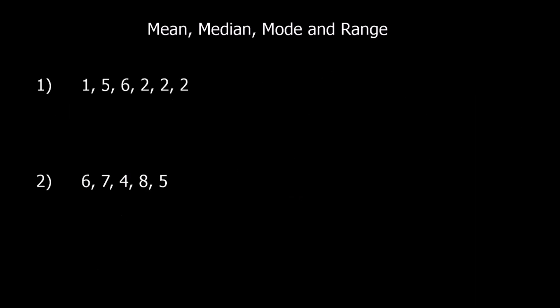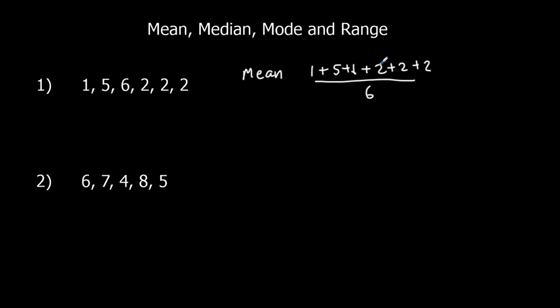Pause the video and try these questions, then I'll put the answers up after. Question 1: the mean — add them all up, divide by how many. 1 plus 5 plus 6 plus 2 plus 2 plus 2, divided by 6. That's 18 divided by 6, which is 3. So the mean is 3.